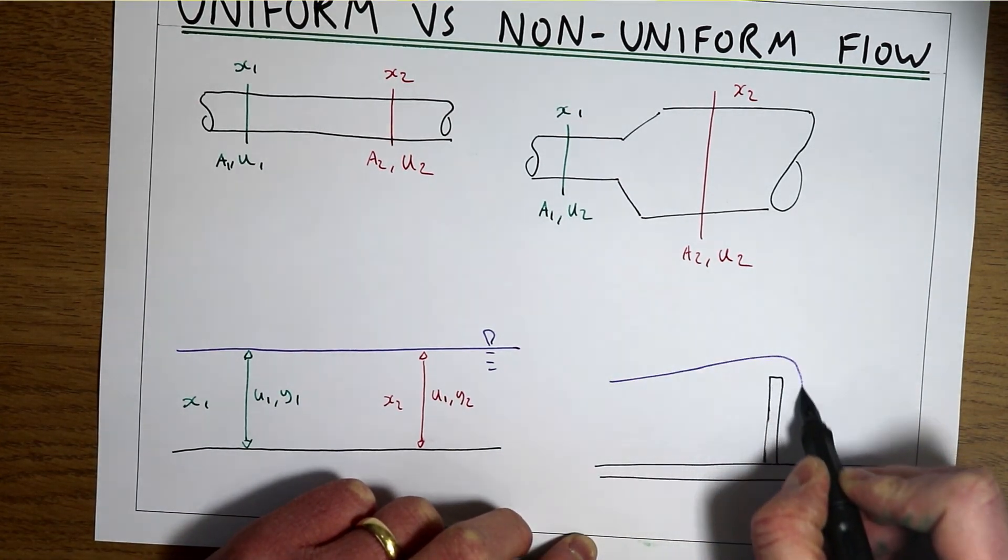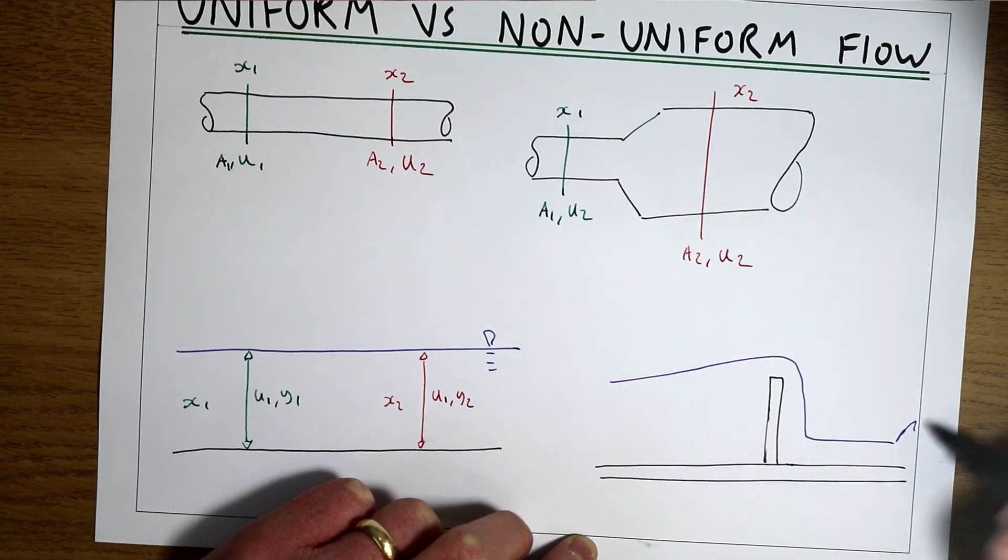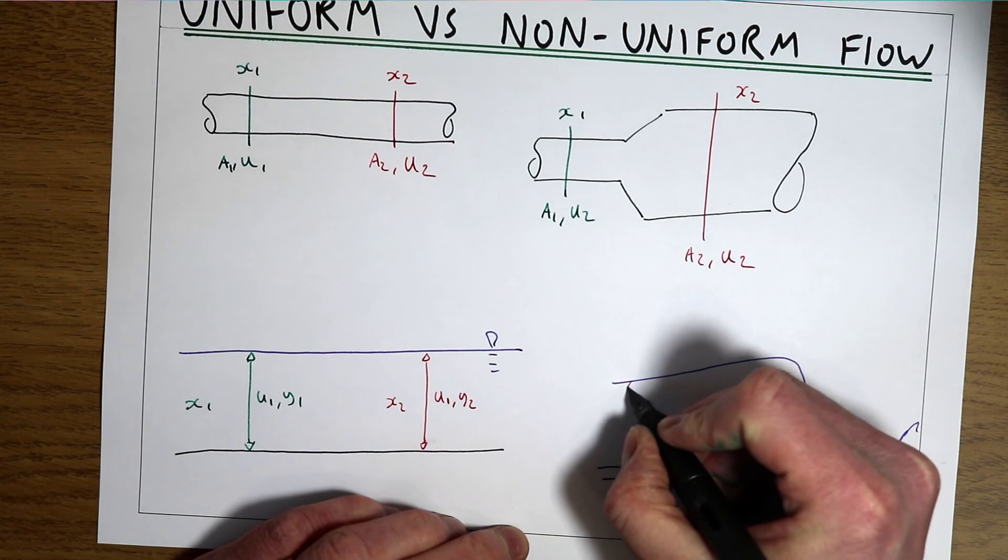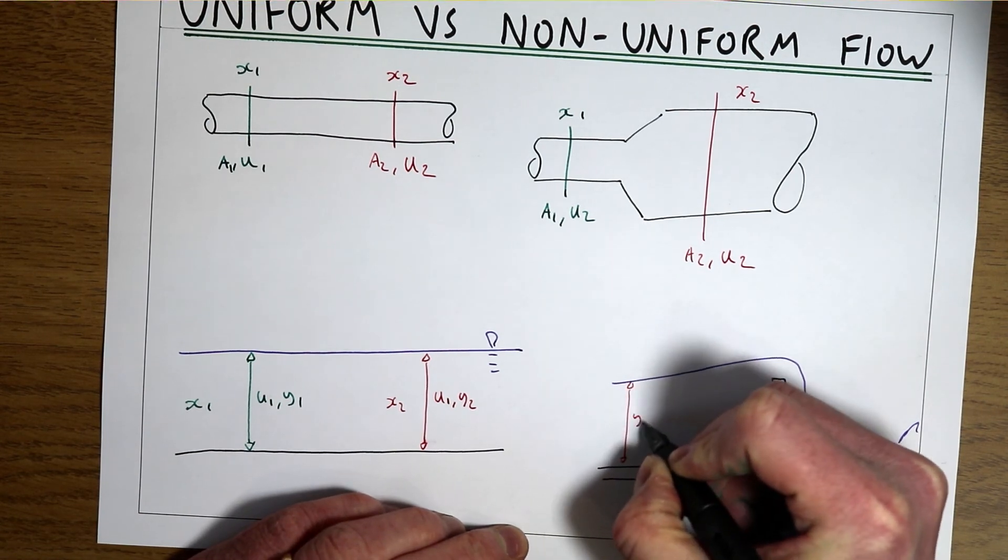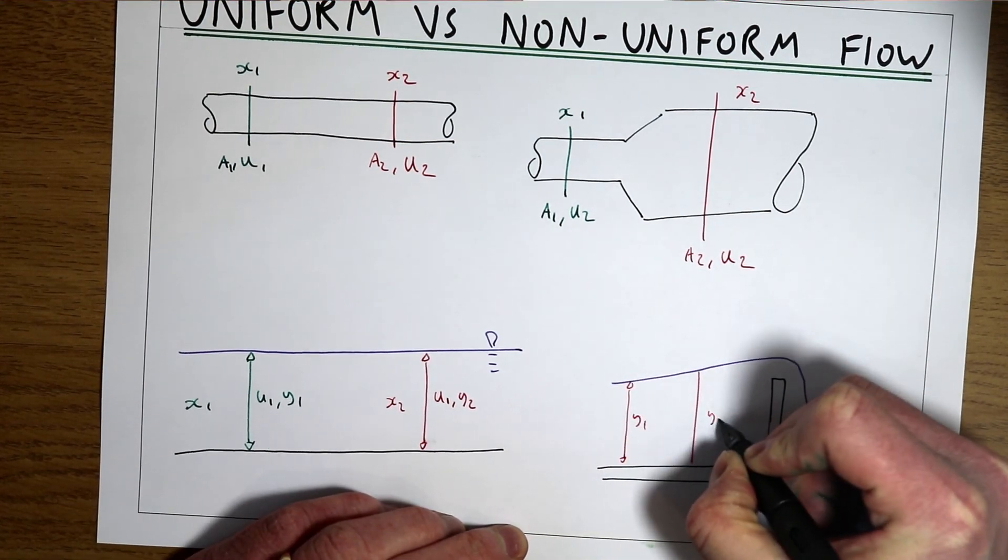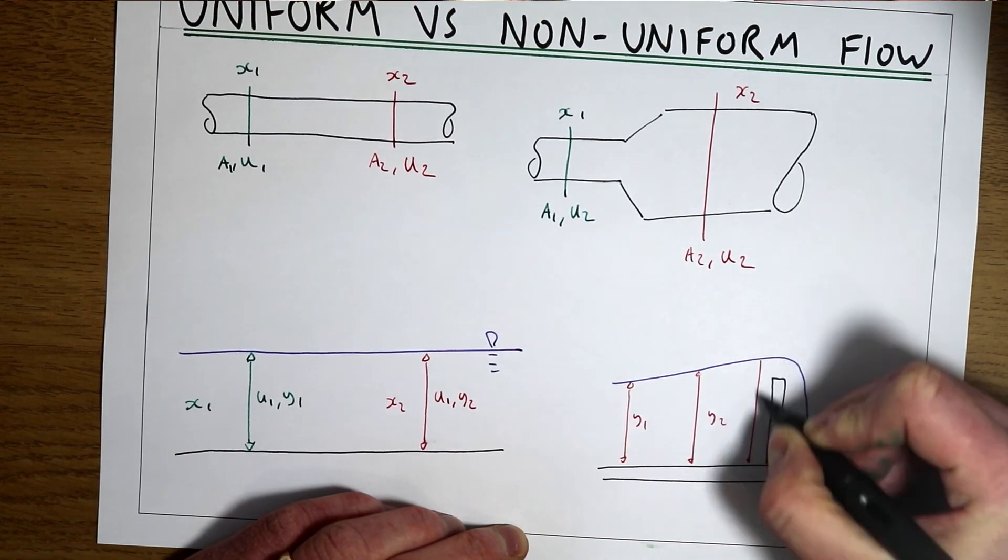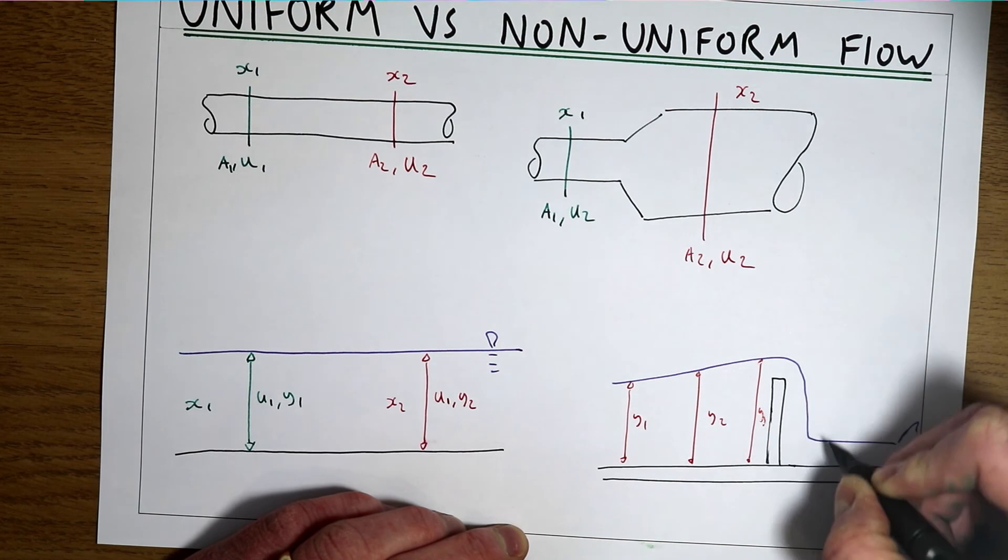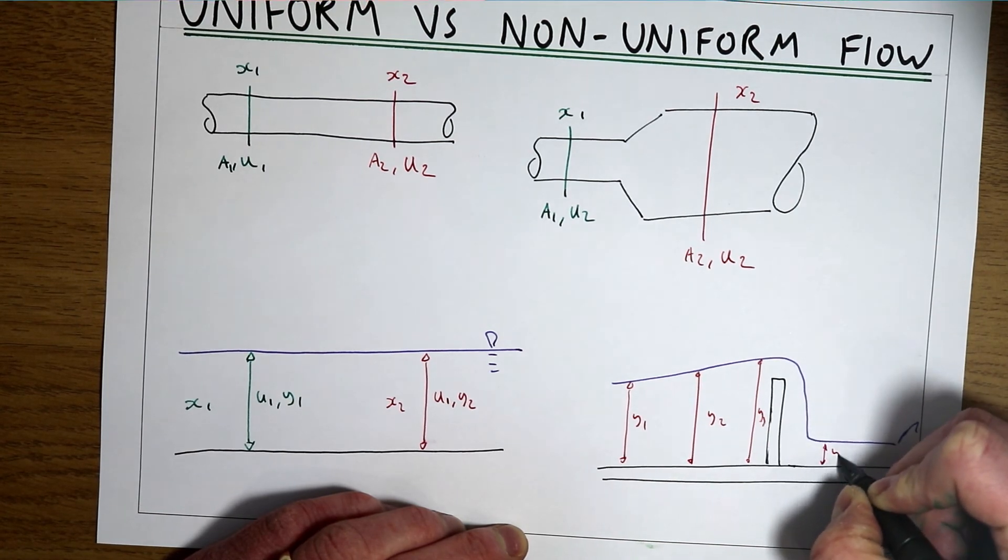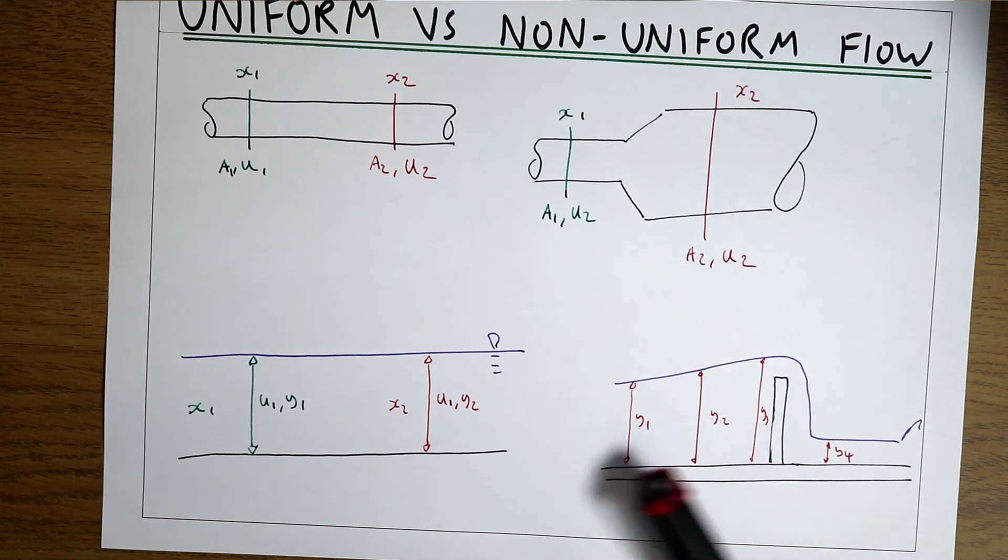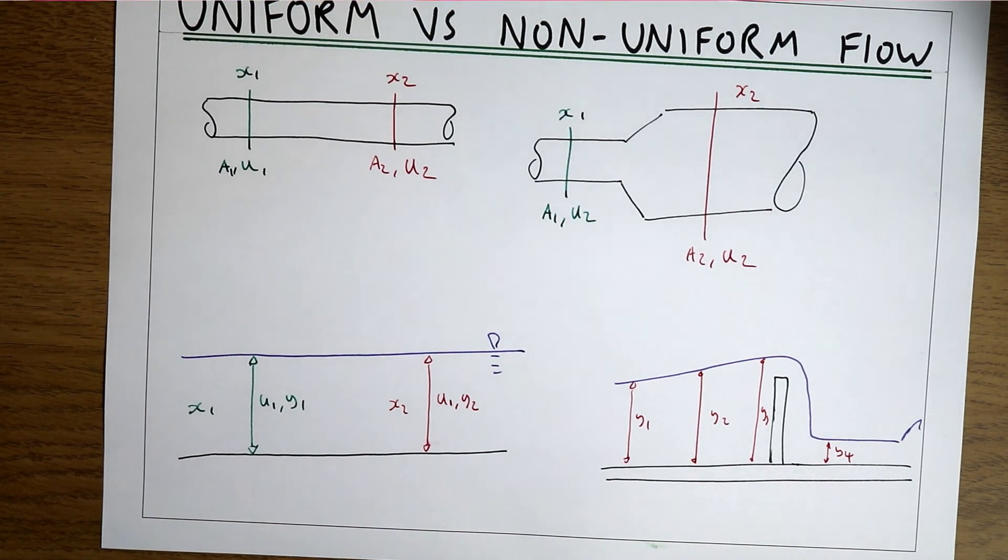So what we're going to get now is some variation in the flow. So the flow depth as we move down the channel is now going to be varying. So this would be non-uniform flow because as we move down the channel the flow depth is changing.